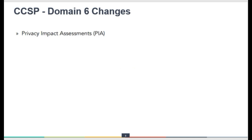Domain 6 has no change in weightage, and the privacy impact assessment is an altogether new topic being added in domain 6. PIA — the privacy impact assessment — is becoming a challenge worldwide as every country is coming up with different privacy regulations. We already have some privacy regulations in domain 6, but now the privacy impact assessment is a new topic for performing and discussing PIA terminologies and discussions related to this topic in this domain.